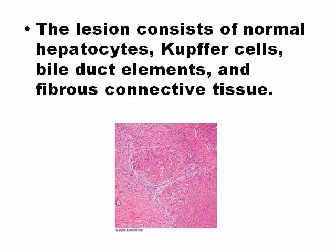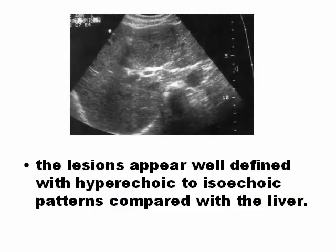Focal nodular hyperplasia contains normal liver cells but in a slightly different structure, appearing hypoechoic to isoechoic.